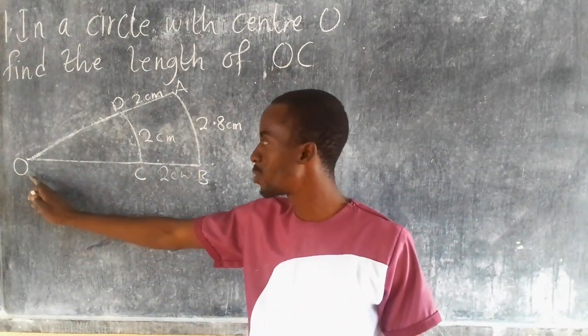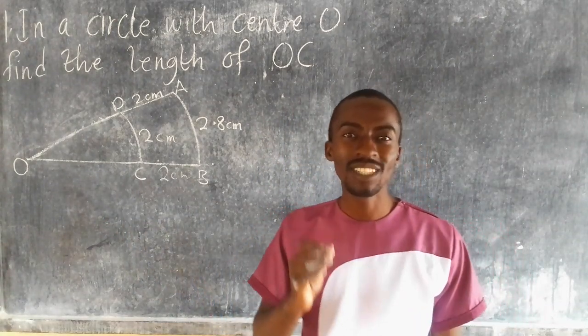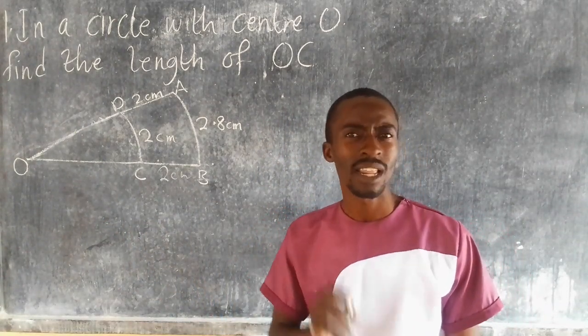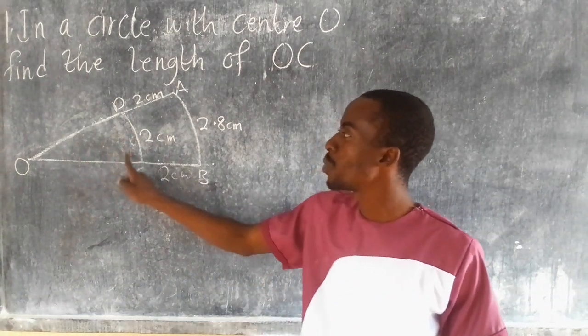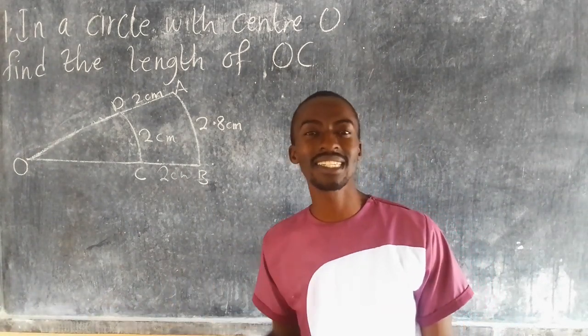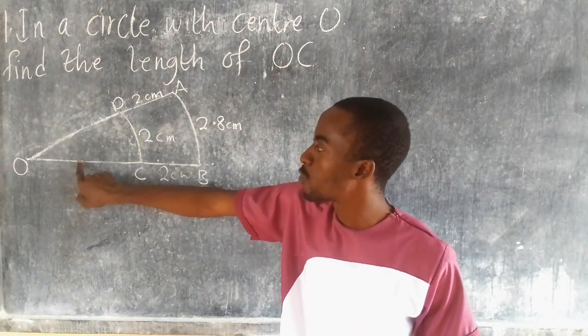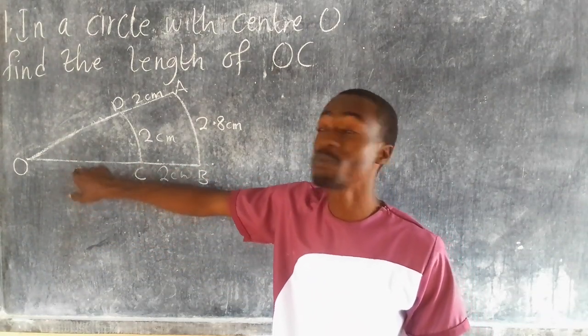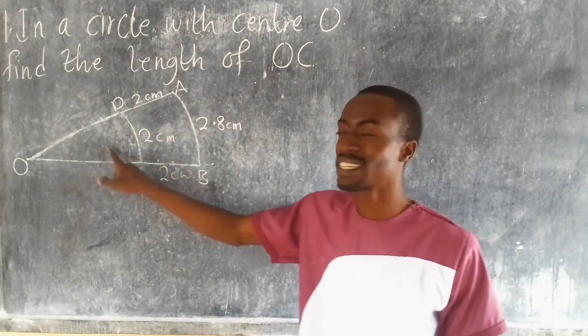Now, how do we find the value of OC? To find OC, we need to use what we call proportion. Why proportion? Because we are dealing with concentric sectors. What I mean by concentric sectors is that these sectors are formed from the same angle, from the same radius. This is the sector, and this is the sector here.